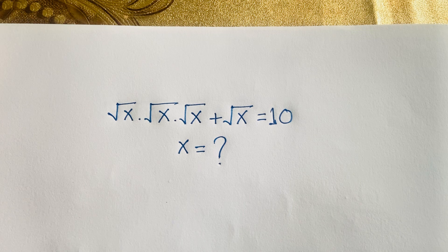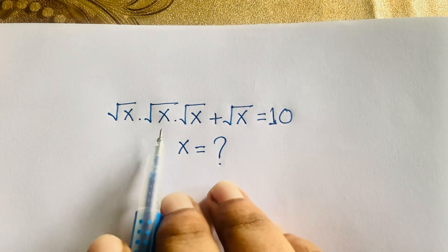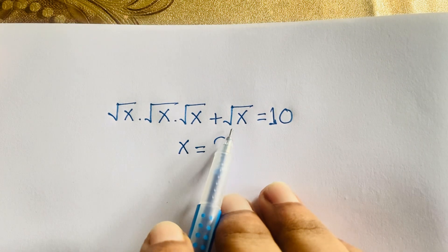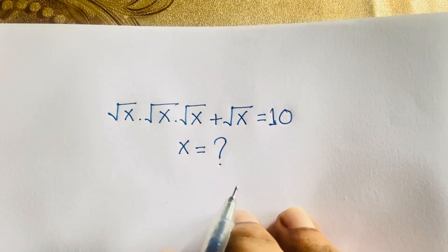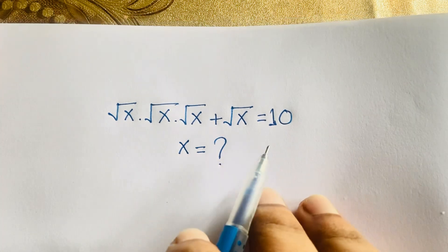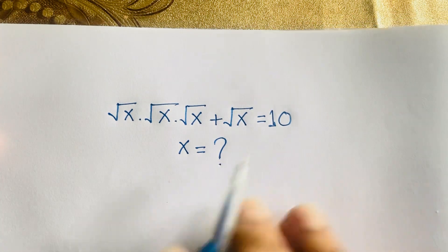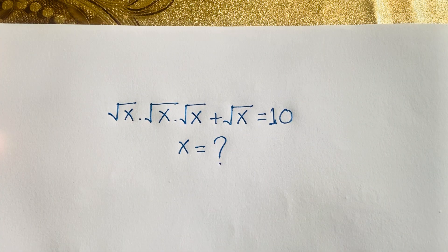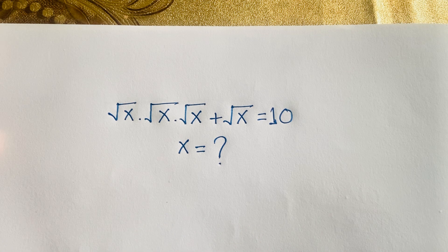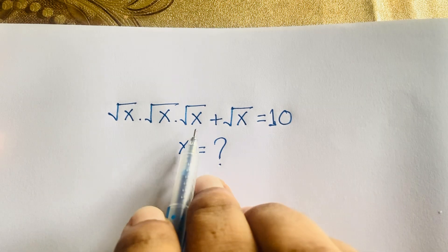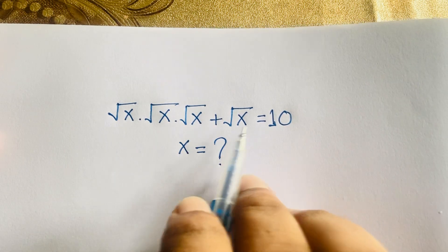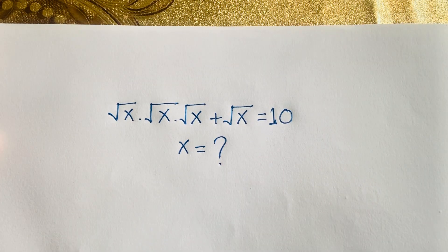If you think x is equal to 1, then 1 times 1 times 1 is 1, plus 1 is 2, and 2 is not equal to 10. If x equals 2 or x equals 3, the left-hand side and right-hand side are not equal. But if x equals 4, then 2 times 2 times 2 is 8, and 8 plus 2 is 10. So x is equal to 4. This is our final answer.